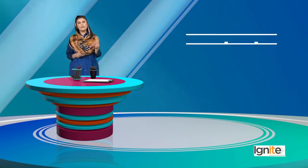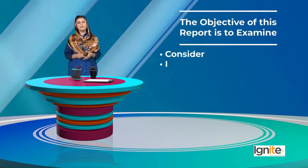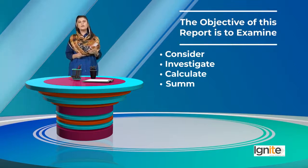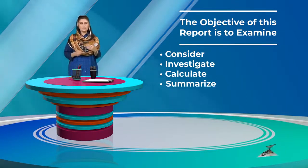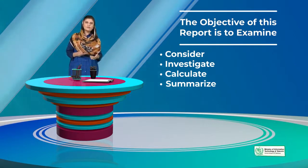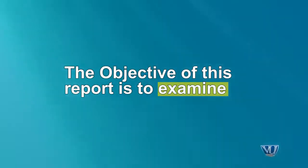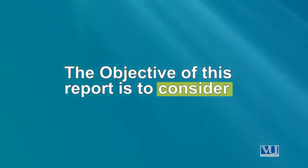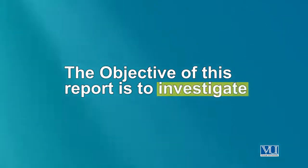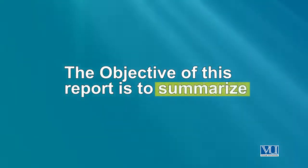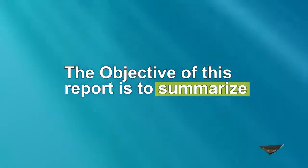Here is some vocabulary related to report structure that you can use. For example, at the beginning you might write 'the objective of this report is to examine.' You can also write: 'the objective or aim is to consider, to investigate, to calculate, or to summarize the findings, research, activities,' and so on. These are words with similar meanings that you can use interchangeably.